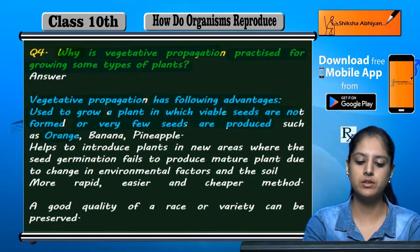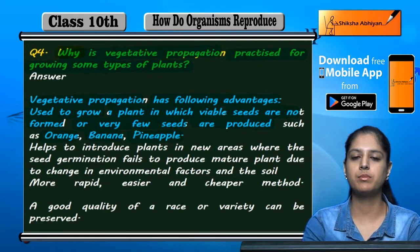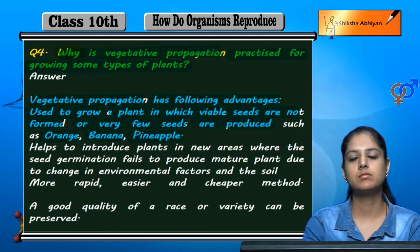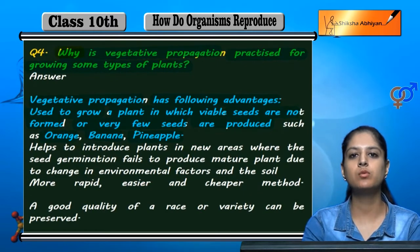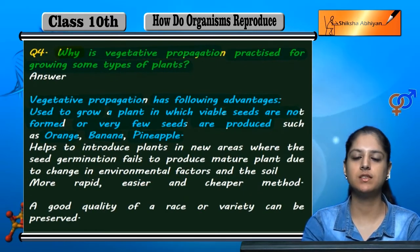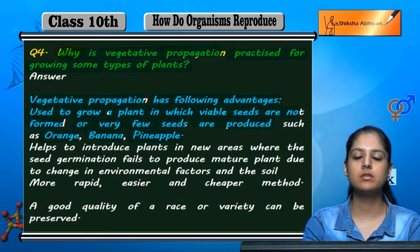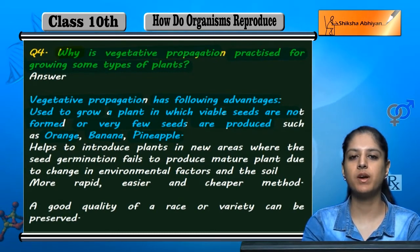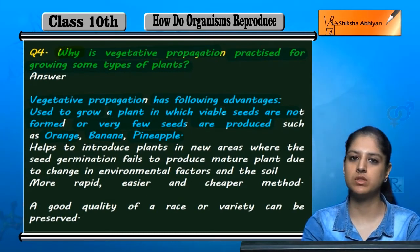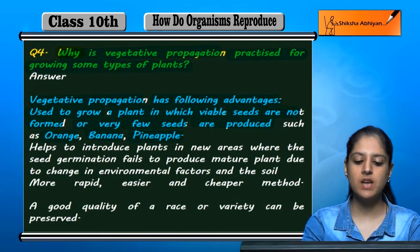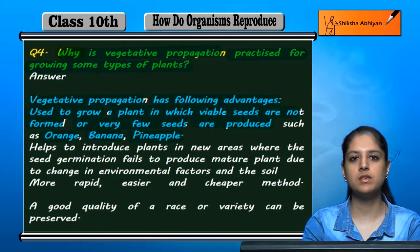Like orange, banana, and pineapple. You will observe that in comparison to watermelon, there are many seeds, but in orange there are little seeds. There are little seeds in banana and pineapple as well. So this type of plants, we can grow them using vegetative propagation.